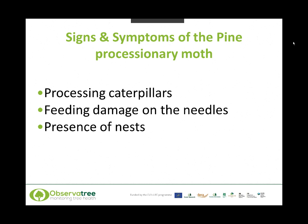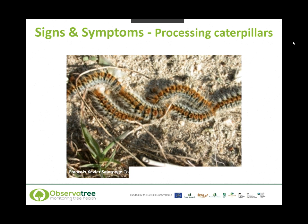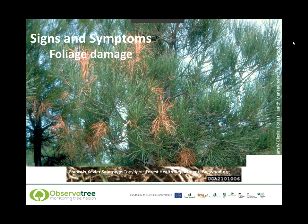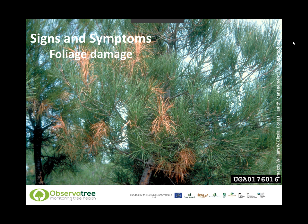The main signs and symptoms of this moth are processing caterpillars, damage to the needles caused by larva feeding, and the presence of nests in the pine trees. The easiest stage of the life cycle to recognize is the caterpillar, especially as they move around in nose-to-tail processions. The most likely time you'd see them would be as they are processing on the ground in the winter months and early spring. This discoloration and defoliation of the needles results from the caterpillar's feeding. The extent of damage depends on how heavy the infestation is, with high levels resulting in complete defoliation of the tree.